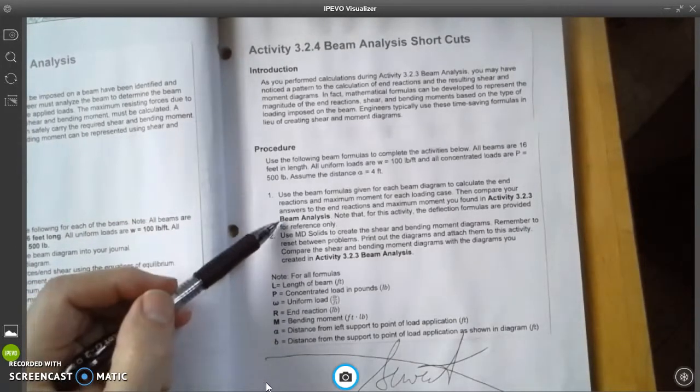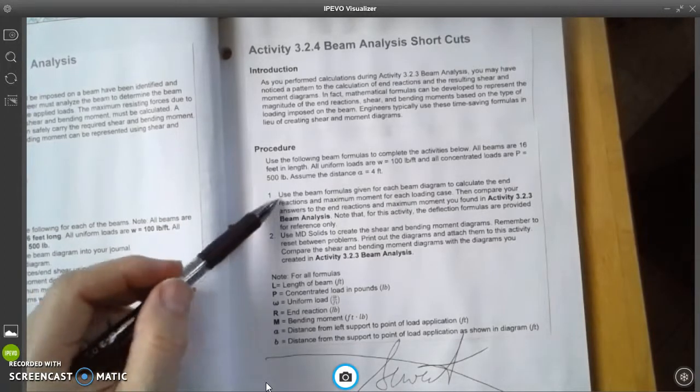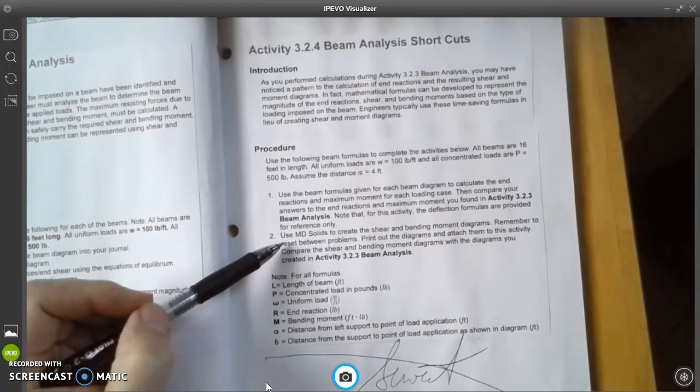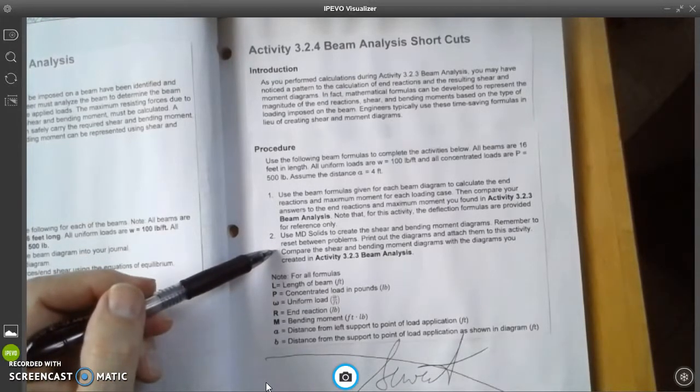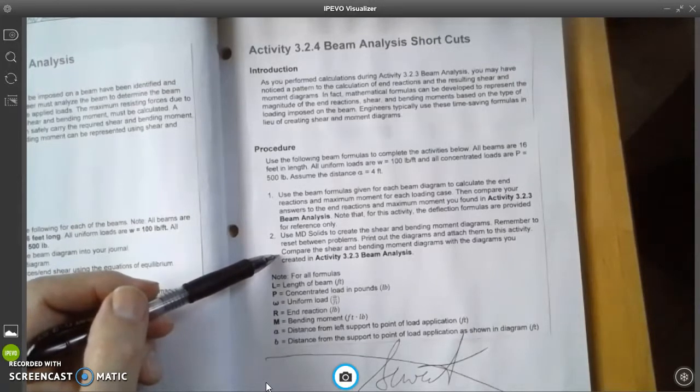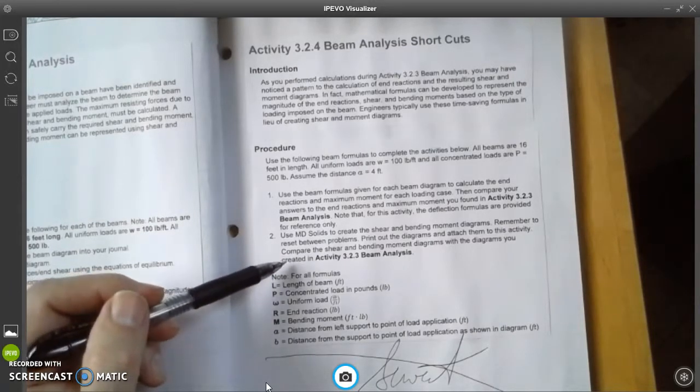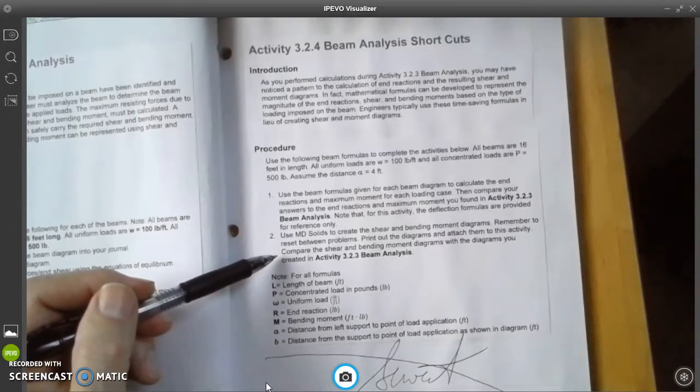Then the second thing we're going to do after we do this—this is the first shortcut right here—the second one is we're going to use a program called MD Solids to create what are called shear and bending moment diagrams. Remember to reset between the problems. You're going to print out the diagrams and attach them to this activity. You're going to compare shear and bending moment diagrams.